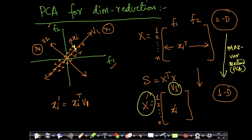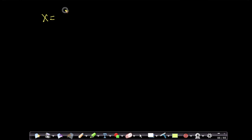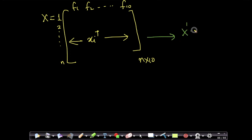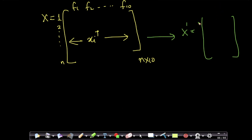Now let's take a 10-dimensional example. Assume x has features f1, f2, through f10 with n points, making it an n×10 matrix. If I want to visualize this data, I need to convert it to x_dash which is two-dimensional — since it's easy to visualize 2D data — giving an n×2 matrix.